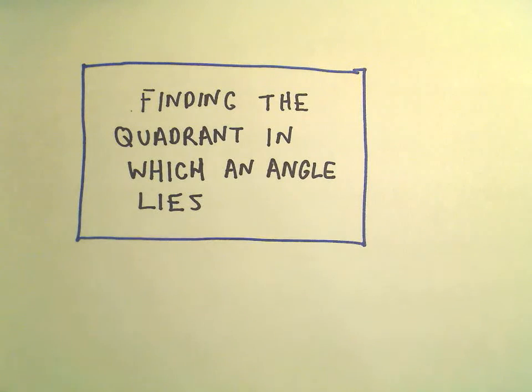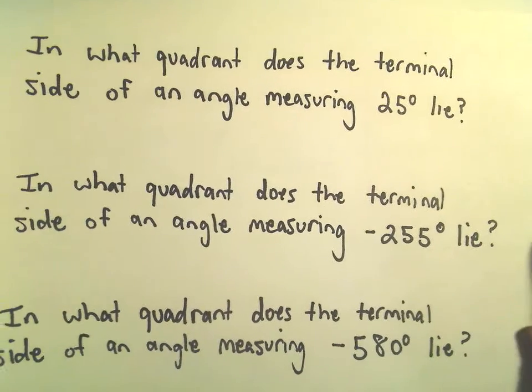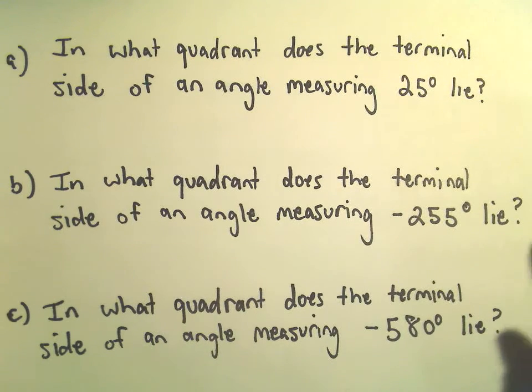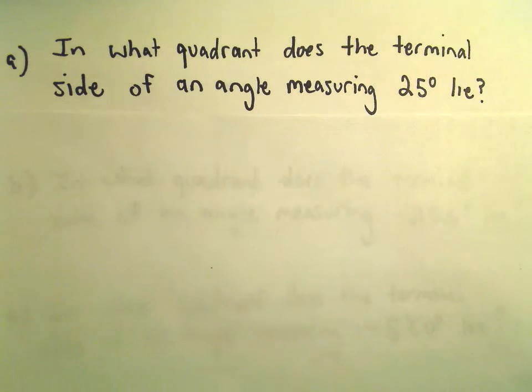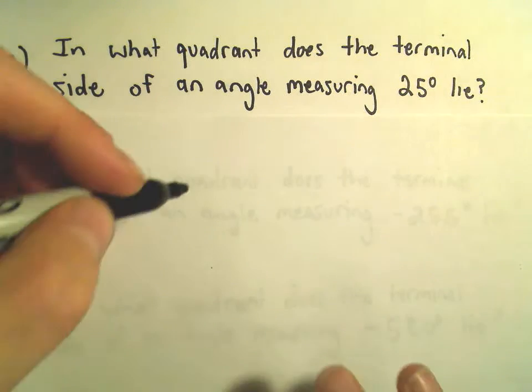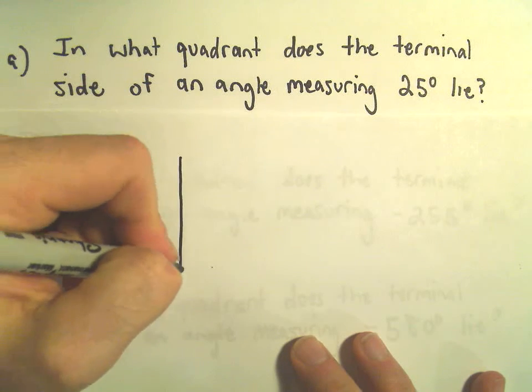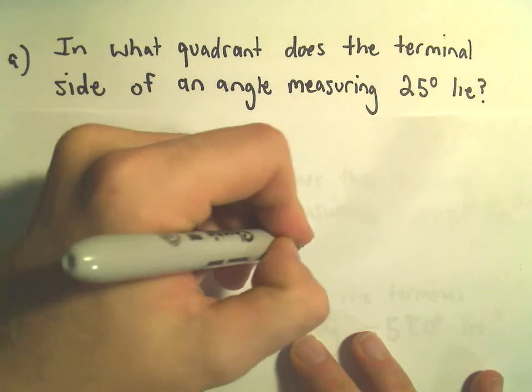Three more questions about finding the quadrant in which an angle lies. In this case, just a little bit of different terminology. We're asking ourselves, in what quadrant does the terminal side of these angles belong? When we talk about terminal, terminal's kind of the end. So it's really just the same question as before.